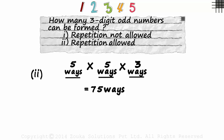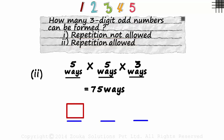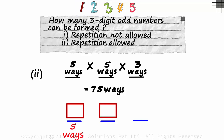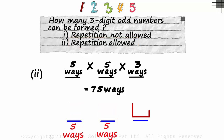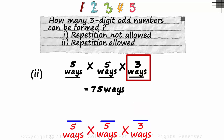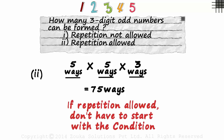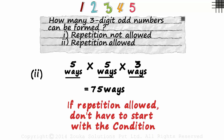Here's a final question: if repetition is allowed, do we have to start with the condition? If we start with the hundreds place — five ways — then the tens digit, also five ways due to repetition, and the units digit can be filled in three ways. The answer does not change even if we start with the hundreds place. So if repetition is allowed, we don't really have to start with the condition. As a general rule, just always start with the condition — that's how we deal with numbers with a condition.